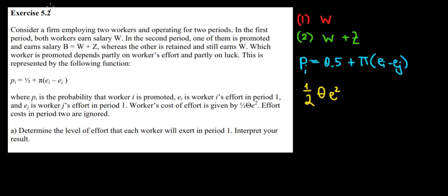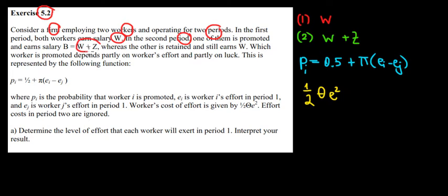Let's start solving question two. We have a firm that employs two workers for two periods. In the first period both earn a salary W. In the second period there can be a promotion, and the wage increases to W plus Z.